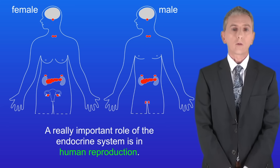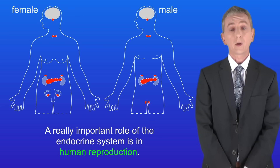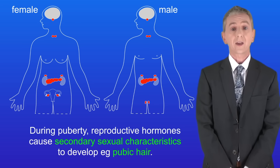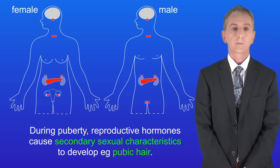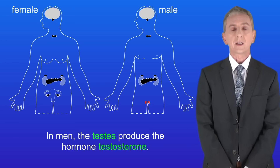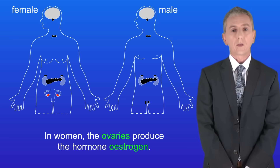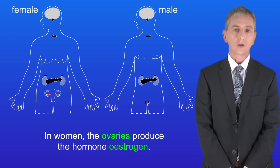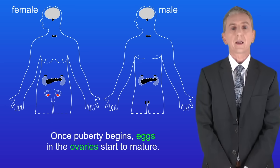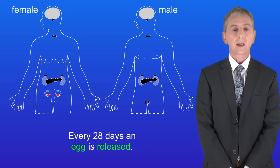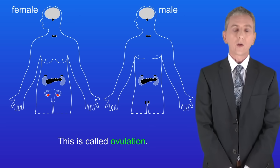Now a really important role of the endocrine system is in human reproduction. During puberty reproductive hormones cause secondary sexual characteristics to develop, for example pubic hair. In men the testes produce the hormone testosterone, and testosterone stimulates the testes to produce sperm. In women the ovaries produce the hormone estrogen. Once puberty begins, eggs in the ovaries start to mature and every 28 days an egg is released. This is called ovulation.